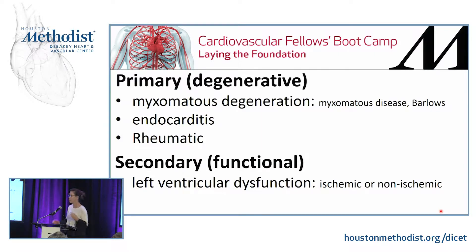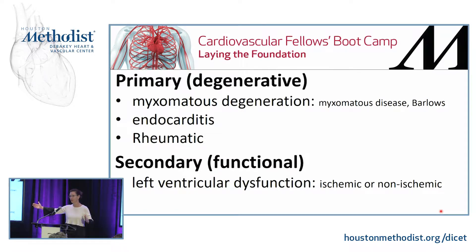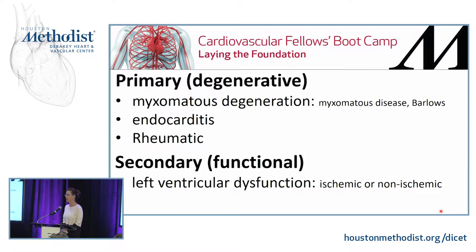Primary or degenerative mitral regurgitation can be due to a few things. One is myxomatous degeneration, which is basically fibroelastic disease. It's kind of on a spectrum like autism — you've got the P2 flail on one end, and then you've got the Barlow's on the other side. P2 is maybe the Asperger's, and Barlow's is the nonverbal — they're huge, huge valves.